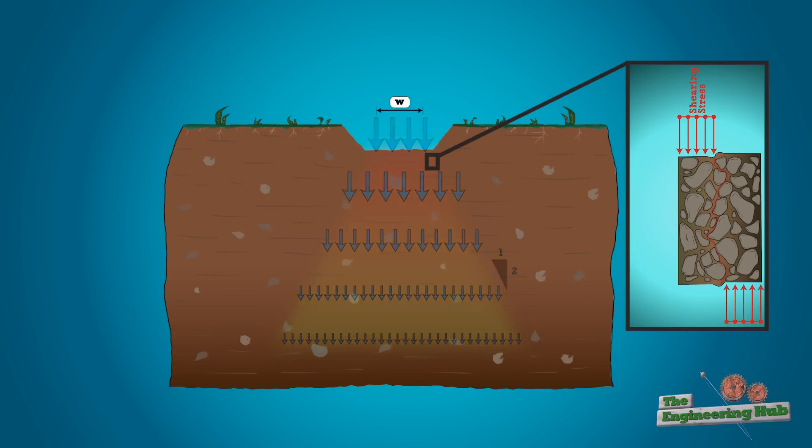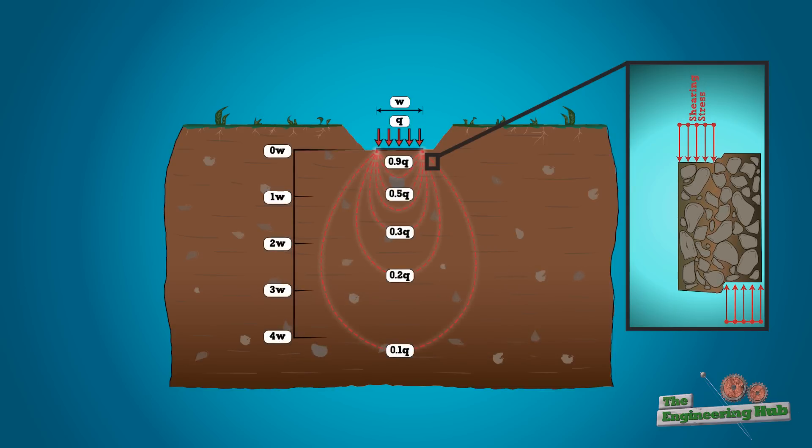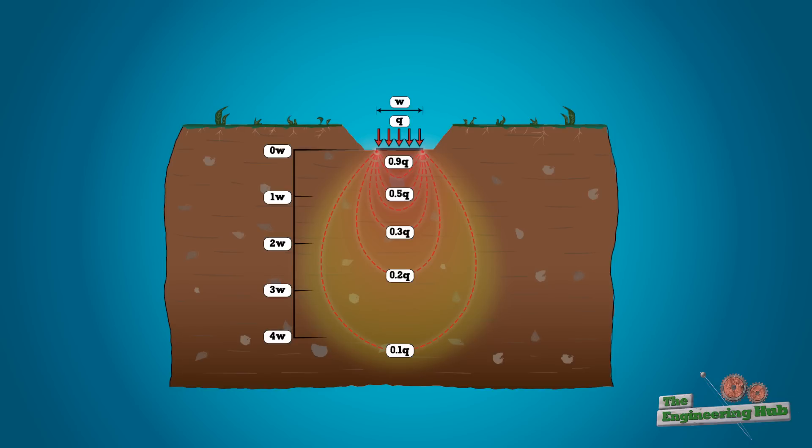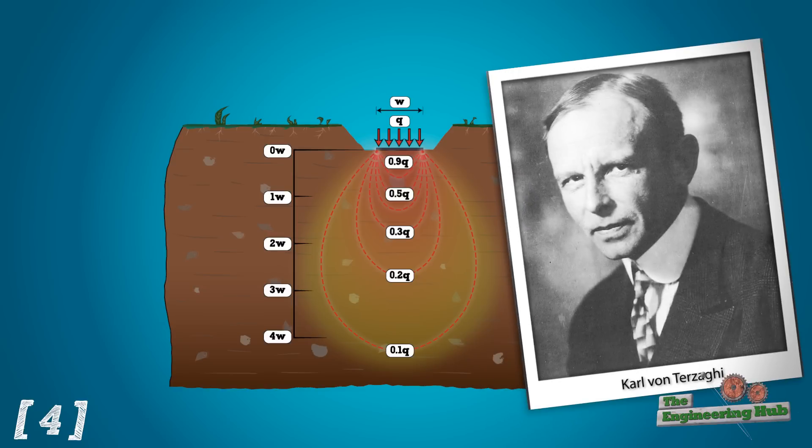This theory was developed decades before the failure at Transcona. What was not known was the bearing failure mechanism, which was first explained by Terzaghi in 1943, 30 years after this failure.